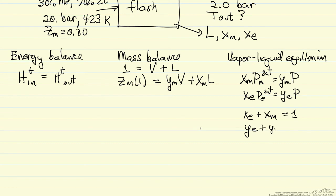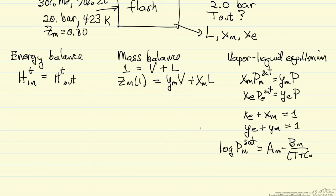For vapor-liquid equilibrium, the mole fractions in the liquid phase must add to one, and the mole fractions in the vapor phase must add to one. We also need the saturation pressures as a function of temperature. The log base 10 of the methanol saturation pressure is given by the Antoine equation: A minus B over (T plus C), where A, B, and C are constants. There's a corresponding equation for ethanol. Keep in mind temperature here is in degrees centigrade and pressure in millimeters of mercury — we'll have to correct for that.